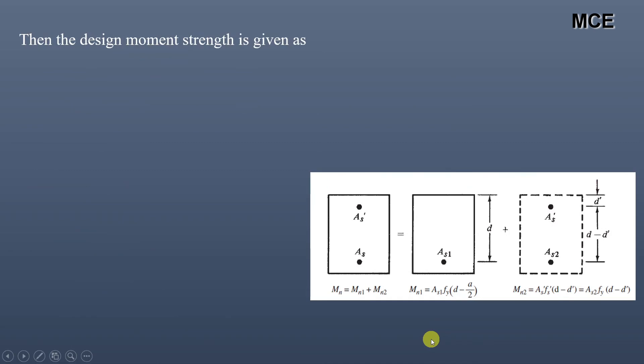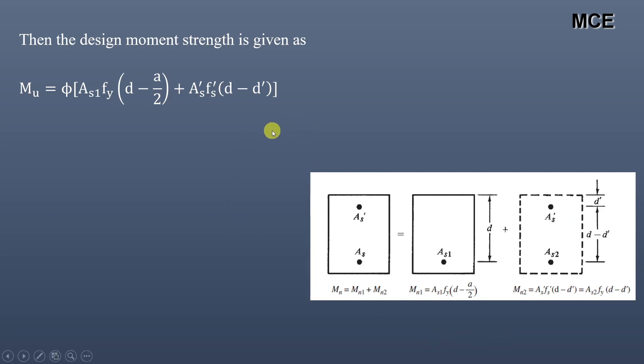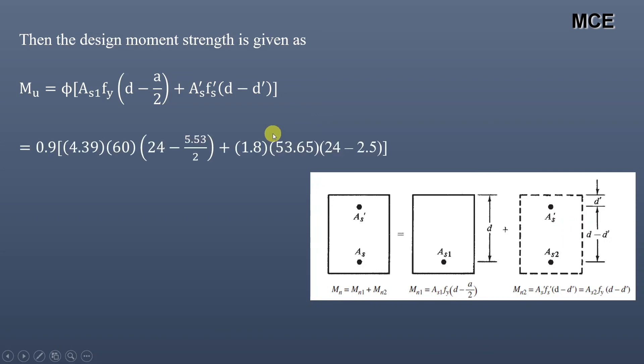Now we can compute the design moment strength of the beam, given as Mu equals phi times [As1 times FY times (D minus A/2) plus AS' times FS' times (D minus D')]. Putting values of different quantities, we get Mu equals 6902.6 kip-inch, or equivalently 575.22 kip-feet. This is how we calculate the design moment capacity of a doubly reinforced beam.